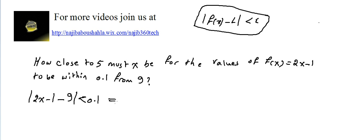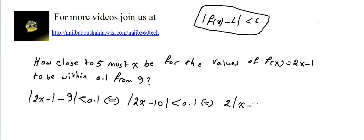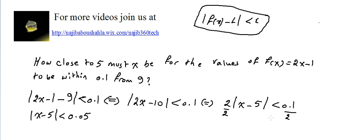This is equivalent to saying absolute value of 2x - 1 - 9, which is 2x - 10, should be less than 0.1. We take 2 outside as a common factor — it's positive — so it becomes 2 times |x - 5| < 0.1. Dividing both sides by 2 gives |x - 5| < 0.05.